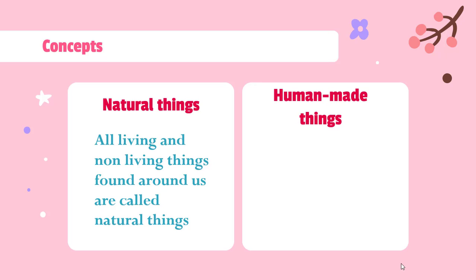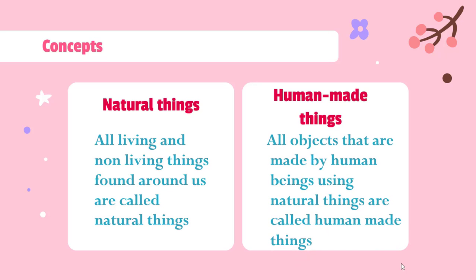Now let us see what are human made things. All objects that are made by human beings using these natural things are called as human made things. The objects that are made by human beings, by using natural things, they are known as human made things.